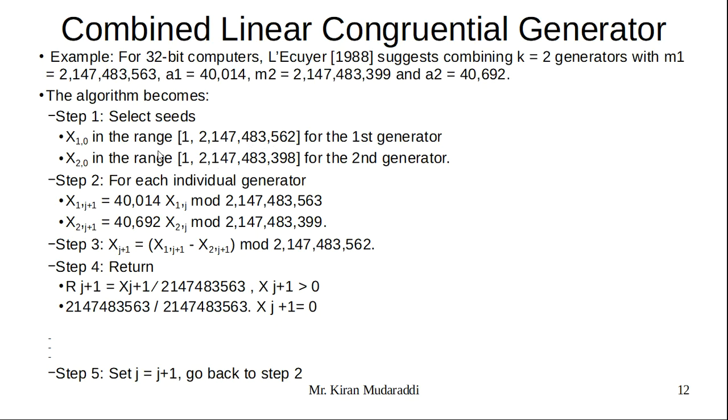Step 1: Select the seed in the range from 1 to m1-1 for the first generator. Similarly, we get the second range. Step 2: For each individual generator, using the formula we are calculating X(1,j+1) and X(2,j+1). Step 3: X(j+1) = (X(1,j+1) - X(2,j+1)) mod m1.